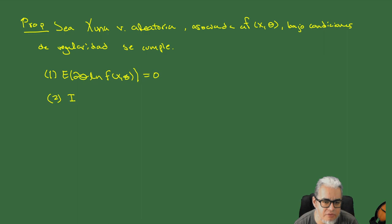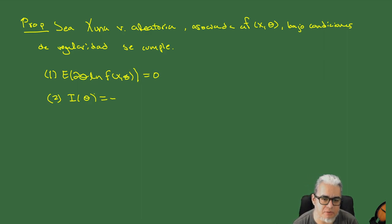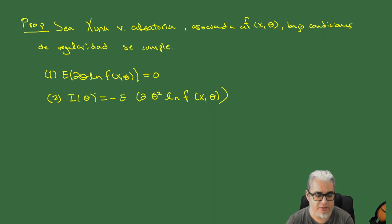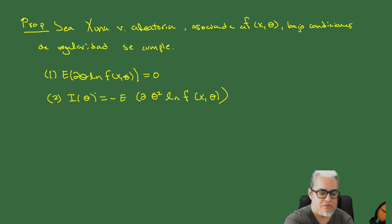Y la segunda es que la información la podemos escribir como menos la esperanza de la parcial segunda respecto de theta del logaritmo de f en x, theta —ya sin el cuadrado. Eso nos va a ayudar a hacer unos cálculos más adelante. Vamos a hacer la prueba.